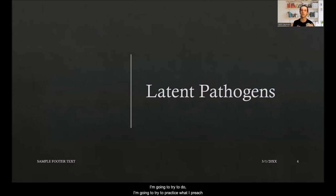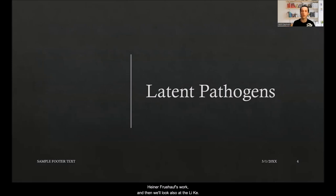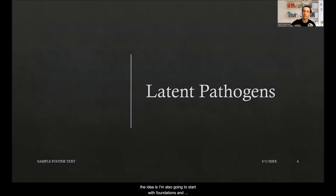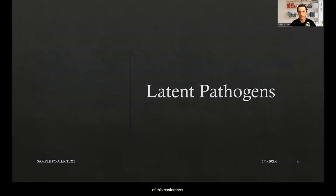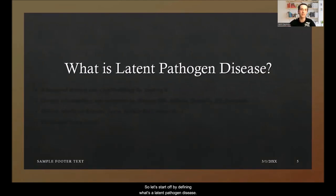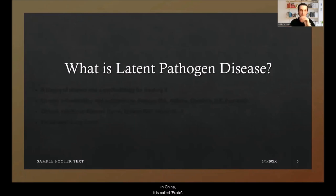Today I'm going to practice what I preach by showing how different traditions approach latent pathogens. We'll look at the gu concept and Heiner Fruehauf, and also at Li Ke. Let's start by defining latent pathogen disease. In the West people may know it through gu and the Heiner Fruehauf school; in China it's often called fu xie. It's really a theory of how disease develops, along with different methodologies for treating it — a specific way disease develops that can encompass a vast variety of conditions.